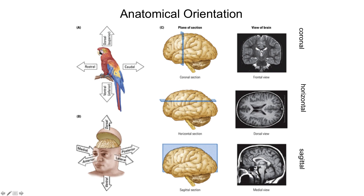Towards the top is dorsal or superior. Two more terms: whenever you go towards the middle area of your brain — going inward — you are going more medial. Whenever you are going more outward, you're going more lateral, meaning towards the side. It's really important for you to remember all these terms.